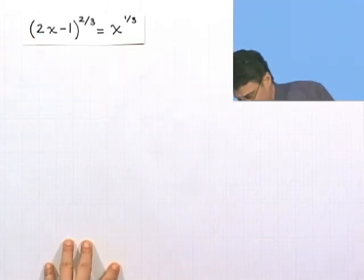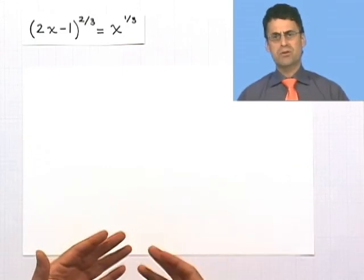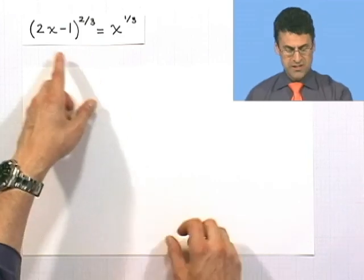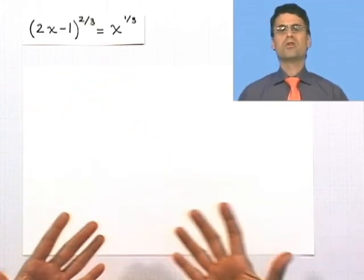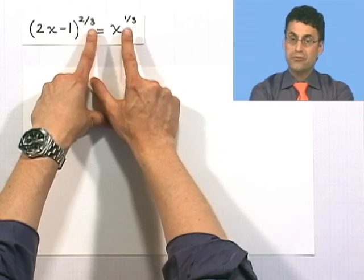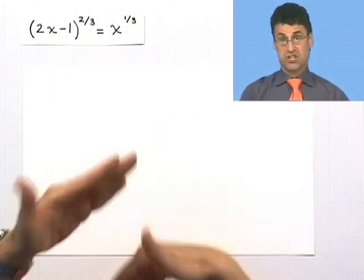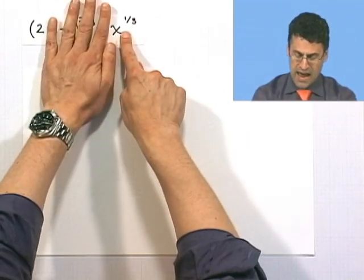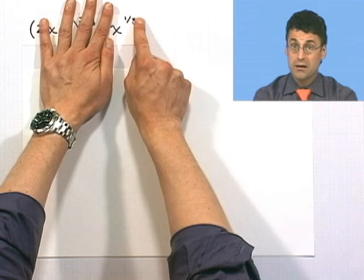Let's try one more, because these require a little something special. This one is really strange: 2x minus 1, all raised to the 2/3 power, is supposed to equal x to the 1/3 power. Those thirds represent cube roots — so this says take the cube root of 2x minus 1, then square it, and that equals the cube root of x. To get rid of the denominator of 3 in the exponents, I'll cube both sides. Taking something to the 1/3 power and then cubing it: 1/3 times 3 gives a power of 1, which is exactly what I want.